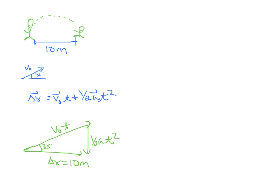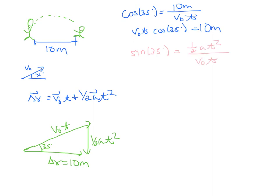With those two pieces of information, I can find the hypotenuse in this triangle by saying that cosine of 35 degrees equals adjacent over hypotenuse. So v naught t cosine of 35 degrees equals 10 meters. I can also do the other side of the triangle to say that sine of 35 degrees equals opposite, one half a t squared, over hypotenuse v naught t. So v naught t sine of 35 equals half a t squared, which gives us v naught sine of 35 equals half a t.